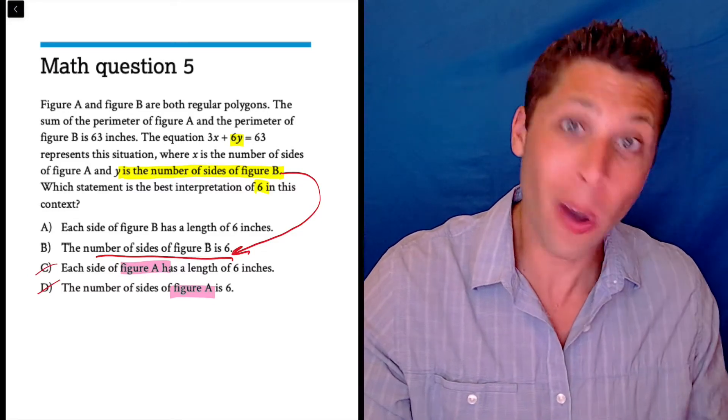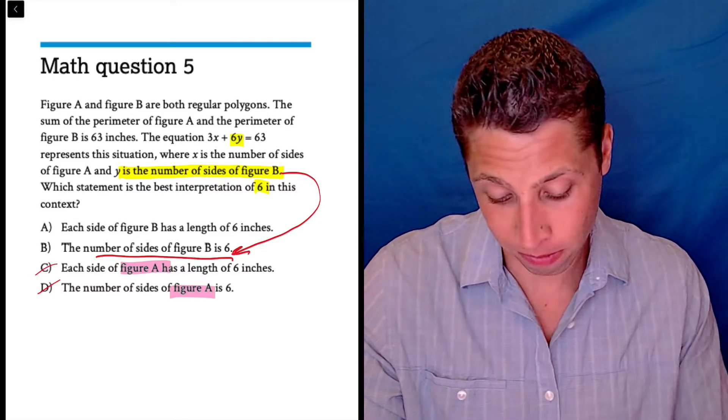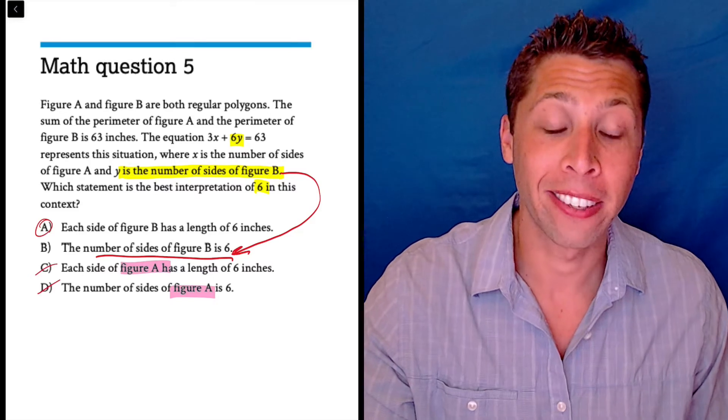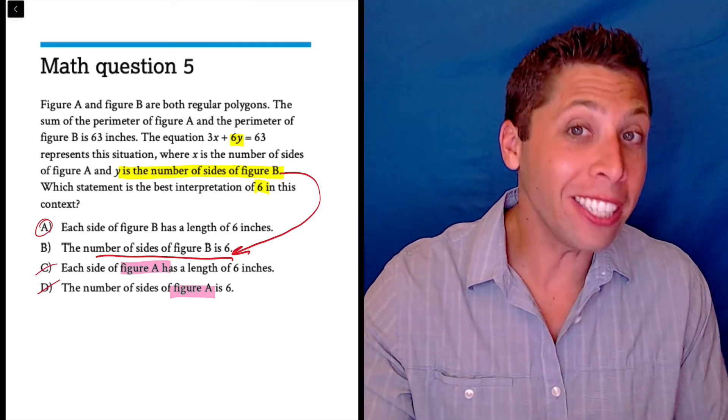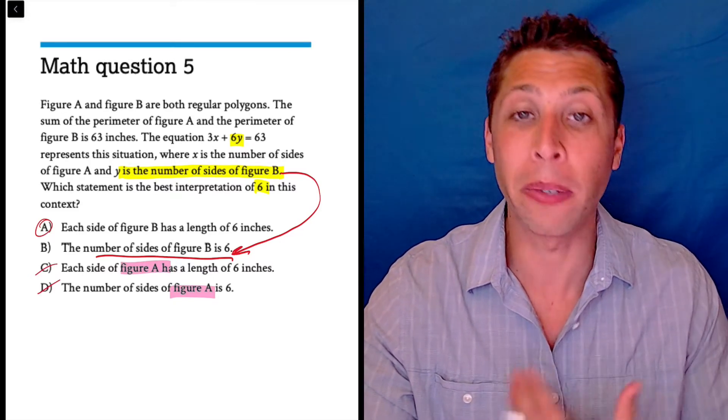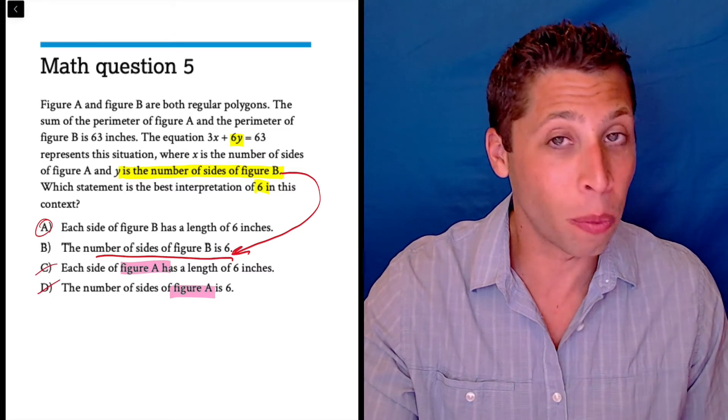So six can't be that. That's what Y is. They told me that. So I guess it has to be A. Look at that. You see, we didn't really need to understand what the six was. We were just able to process of elimination our way there. That's okay.